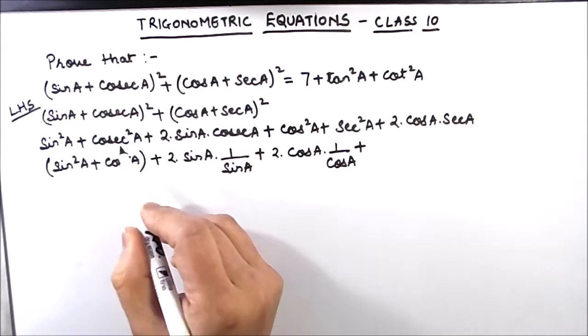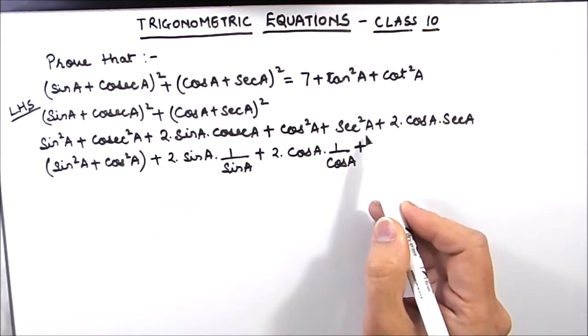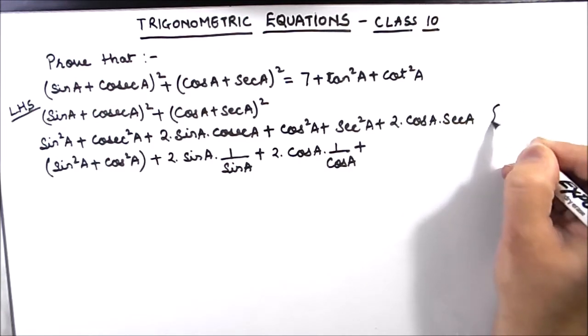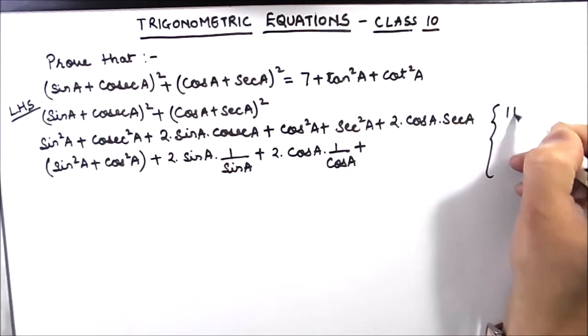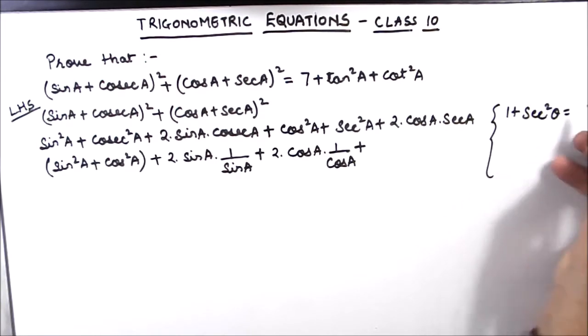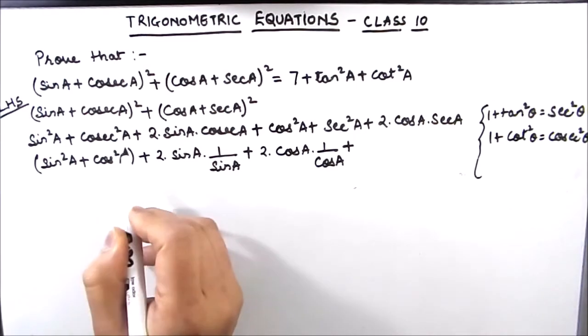Now we are left with cosec² A and sec² A. Now we are also going to use the identities: 1 + tan² θ = sec² θ and 1 + cot² θ = cosec² θ.